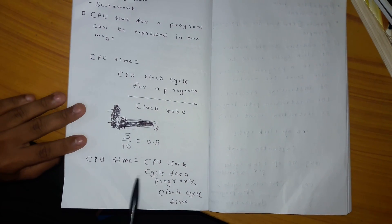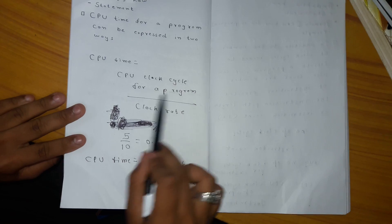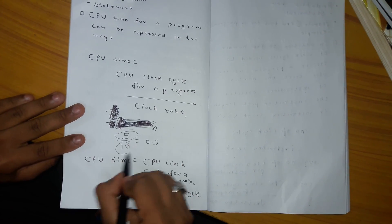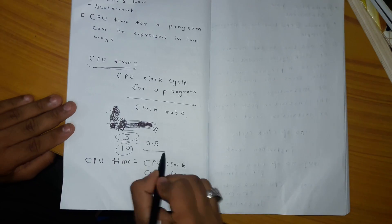For example, if CPU clock cycles for a program is 5 and clock rate is 10, we can get a CPU time of 0.5.